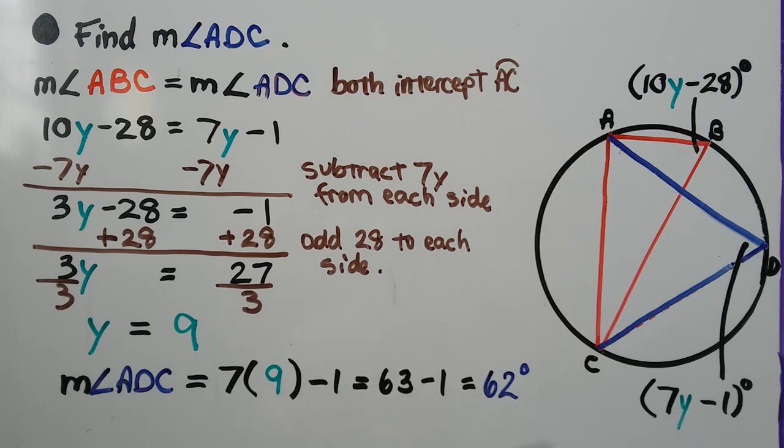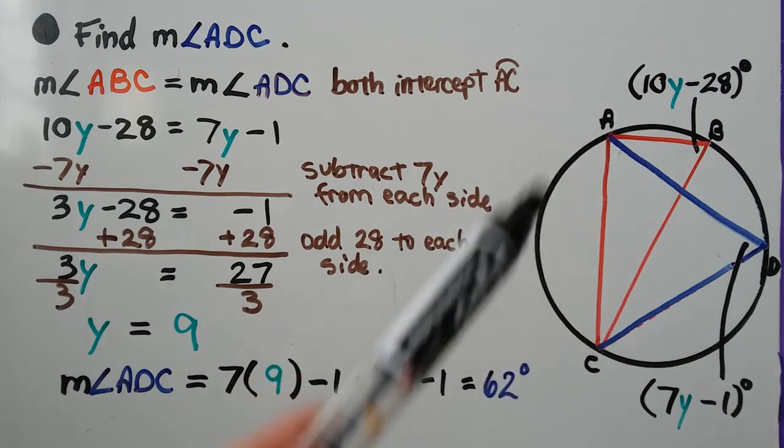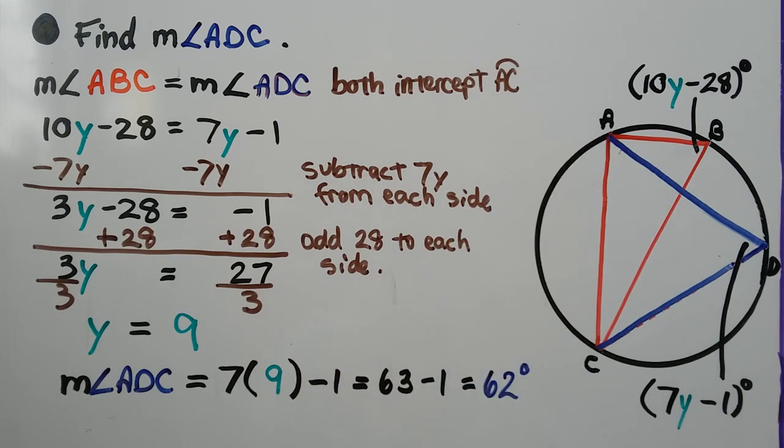We can put the 9 in, substitute it in, and we get the measure of angle ADC equals 7 times 9 minus 1, which is 62 degrees. So knowing that they had arc AC in common helped us.